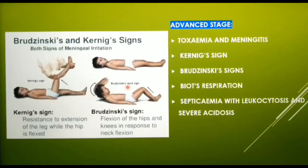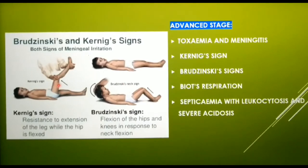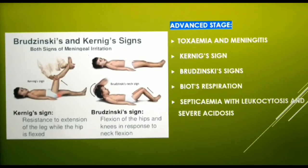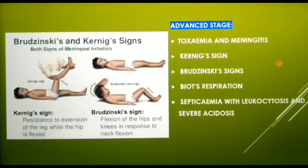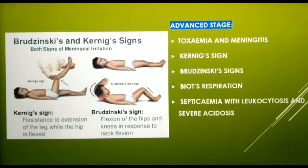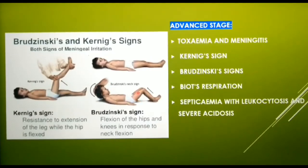Positive Kernig sign can also be elicited. Kernig sign is severe stiffness of the hamstrings — the posterior thigh muscles — causing an inability to straighten the leg when the hip is flexed to 90 degrees. Positive Brudzinski sign refers to passive flexion of the neck, which causes flexion of both legs and thighs, as shown in the diagram.